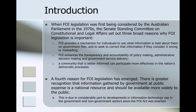When freedom of information legislation was first being considered by the Australian Parliament in the 1970s, the Senate Standing Committee on Constitutional and Legal Affairs set out three broad reasons why FOI legislation is important. First, freedom of information provides a mechanism for individuals to see what information is held about them on government files and to seek to correct that information if they consider it wrong or misleading. Secondly, freedom of information enhances the transparency and accountability of policymaking, administrative decision-making and government service delivery. And thirdly, a community that is better informed can participate more effectively in the nation's democratic process.